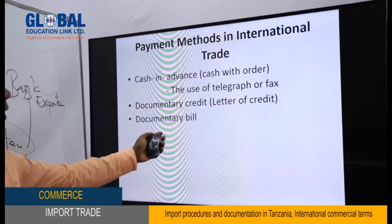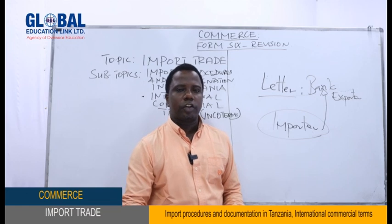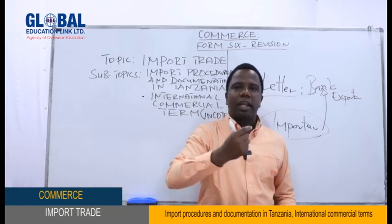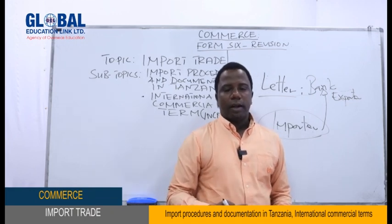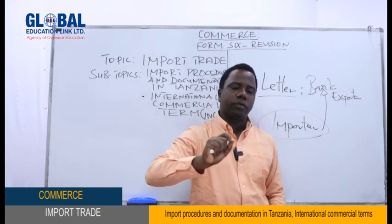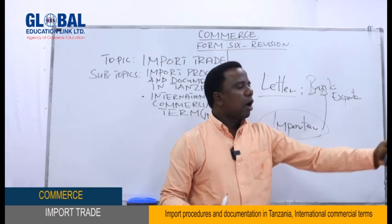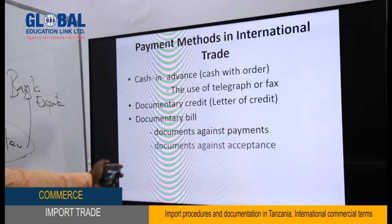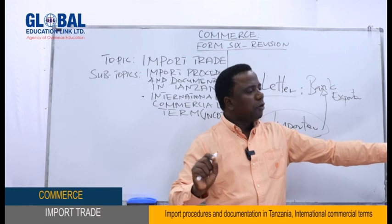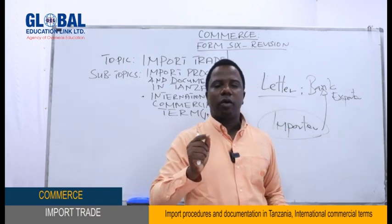Another payment method is the documentary bill. An exporter writes a bill of exchange attached with documents, and the importer accepts it and arranges payment. Under documents against payment (DP), documents are given to the importer only once payment is made. Under documents against acceptance (DA), the importer accepts the bill, receives the documents, and pays on the date written on the bill of exchange.